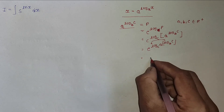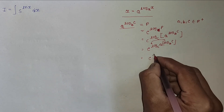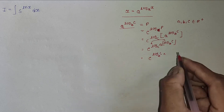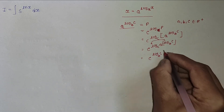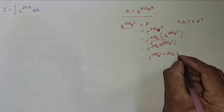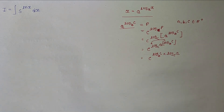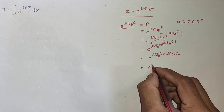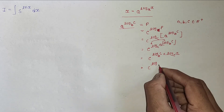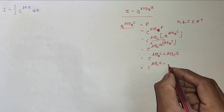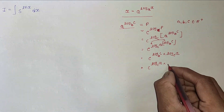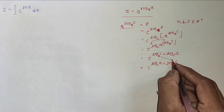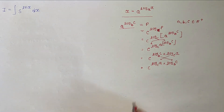This can be written as c^(log_c a · log_b c) — I just interchange the terms. So we have c^(log_c a)^(log_b c), bringing log_c a as a power.